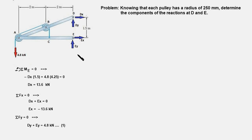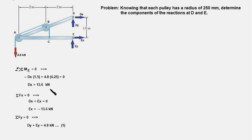The FBD of the entire frame looks like this. We write the moment equation about point E, eliminating the two forces there as well as DY, which all pass through E. The equation has just one unknown, DX. DX times 1.5 creates a clockwise moment, hence the minus sign. The external force of 4.8 kilonewtons produces an anticlockwise moment, with a moment arm equal to the pulley radius plus the 4 meter distance to E, totaling 4.25 meters. This gives DX as 13.6 kilonewtons. Writing the force balance in the x direction — DX plus EX equals zero — gives EX as minus 13.6 kilonewtons.